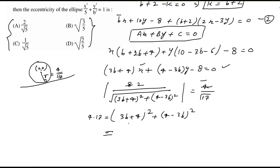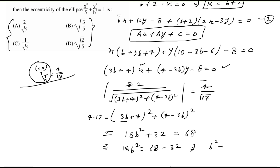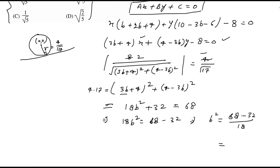Simplifying: expanding the squares gives 9b² plus 24b plus 16 plus 16 minus 24b plus 9b² equal to 68. The 24b terms cancel out, leaving 18b² plus 32 equal to 68. Therefore 18b² equals 68 minus 32 equals 36, so b² equals 36 divided by 18 equals 2.